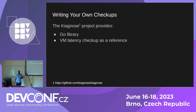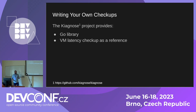If you want to write your own checkup, we have the Kiagnoff project that holds all three checkups. It provides a Go library to help query ConfigMaps and write results to them, and the VM latency checkup serves as a reference implementation. You don't need to use Go — you can use any language that can query the Kubernetes API.